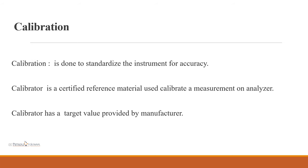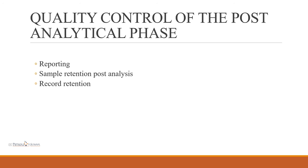Calibration is done to standardize the instrument for accuracy. A calibrator is a certified reference material used to calibrate a measurement on an analyzer. It has a target value provided by the manufacturer. This concludes the analytical phase of quality control.